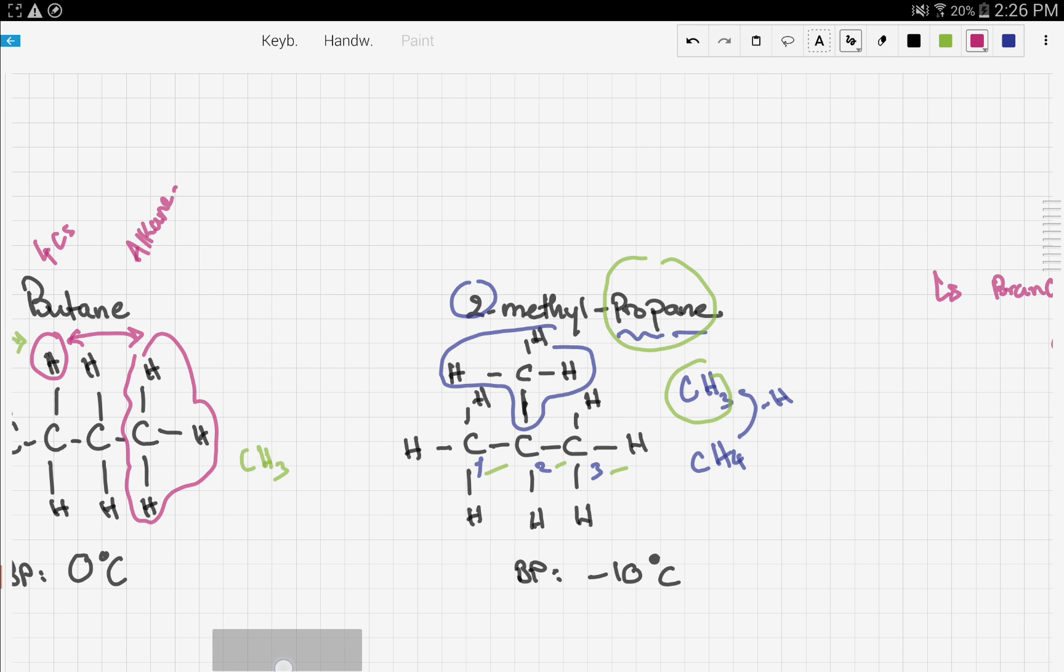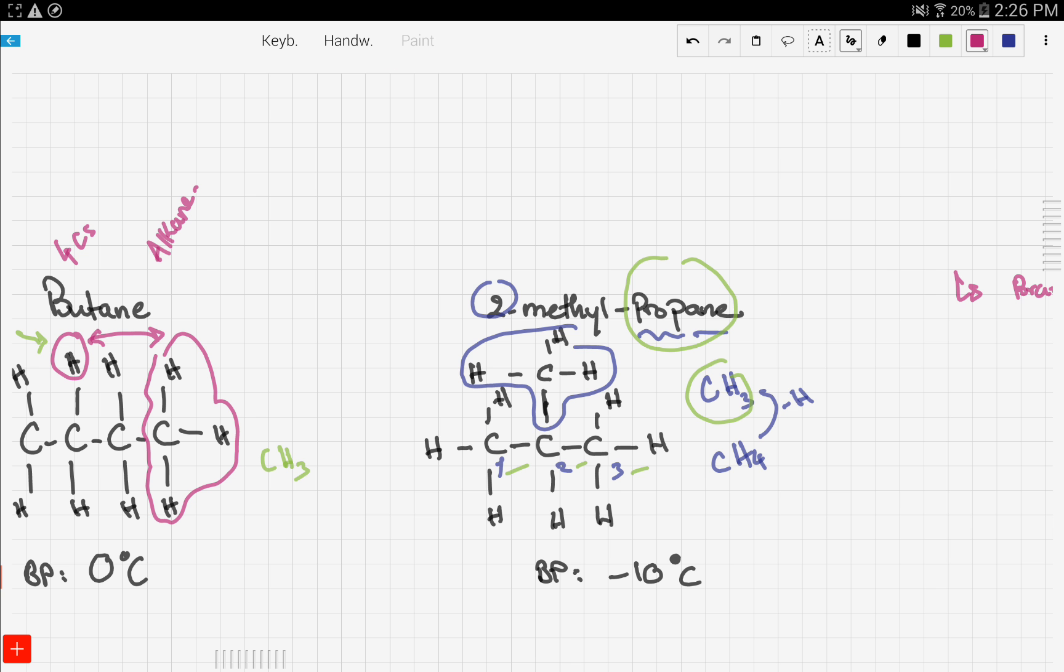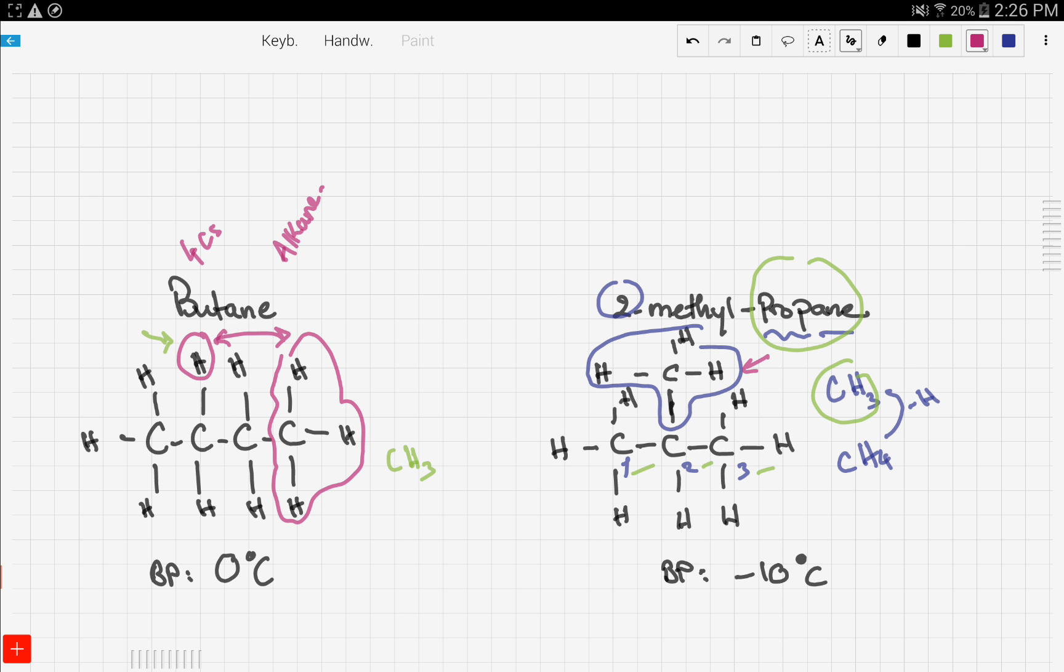See, here, the dimethyl is a branched isomer, because the methyl group is not on the backbone, it's actually a branch. But here, the butane, all the carbons are in one line, one backbone, so therefore, they have a higher boiling point.